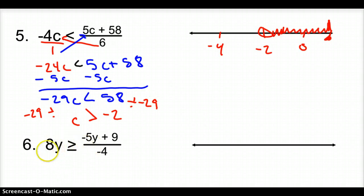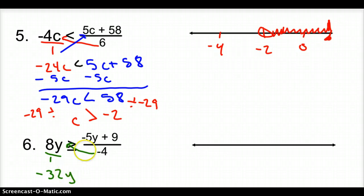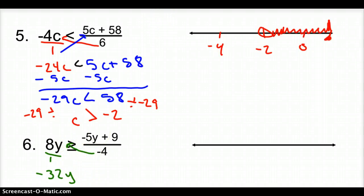For number 6, the first thing we do is put it over 1 and cross multiply. Negative 4 times 8 gives negative 32y. We multiplied across by a negative 4, so we have to flip the sign. Then multiplying the other side by 1 gives negative 5y + 9.